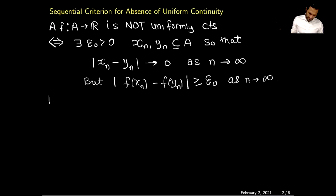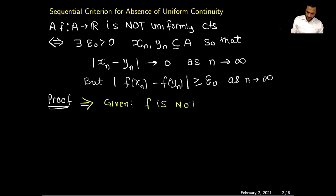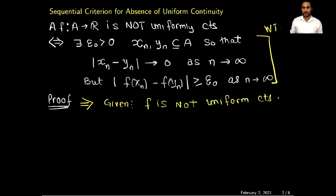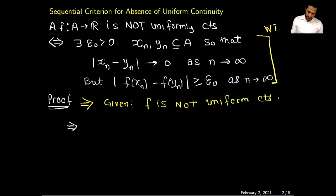Let's prove this criterion. Since it has two directions, I will first prove the forward direction. What is given in the forward direction: f is not uniformly continuous. What we want to show is this statement — in other words, we want to find sequences xn and yn so that their distance goes to 0, but the distance between f of xn and f of yn always stays strictly positive. I will start from what is given, so since f is not uniformly continuous, I will write down the negation of the definition of uniform continuity.